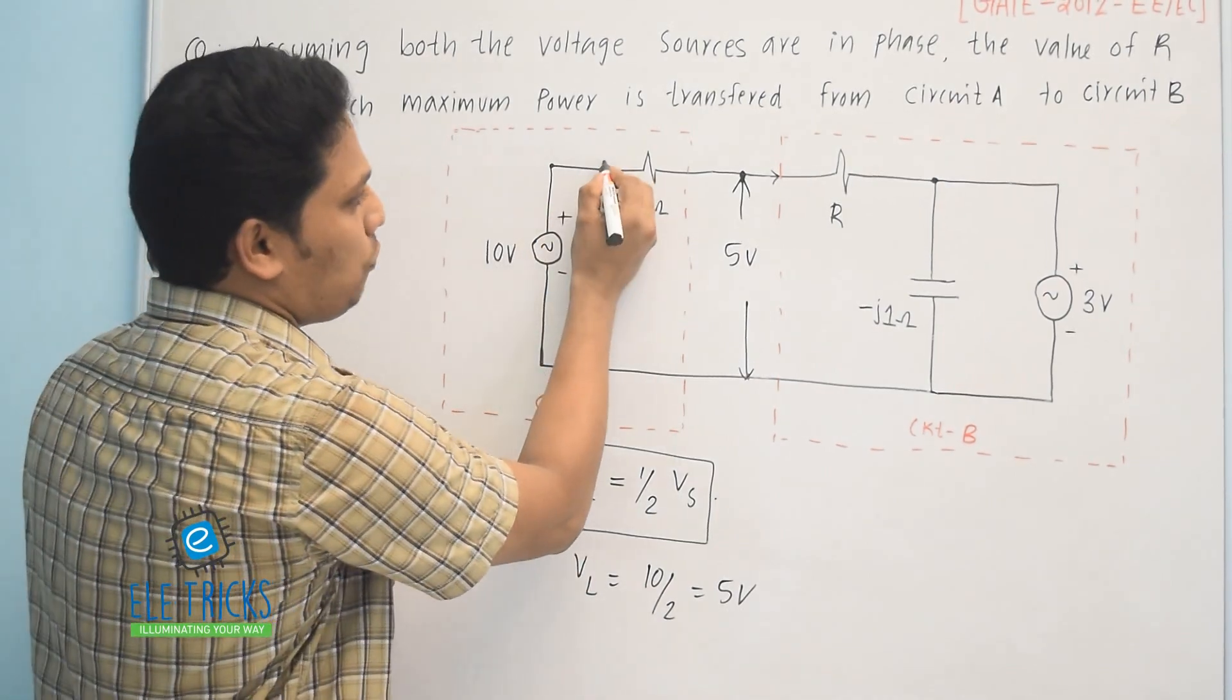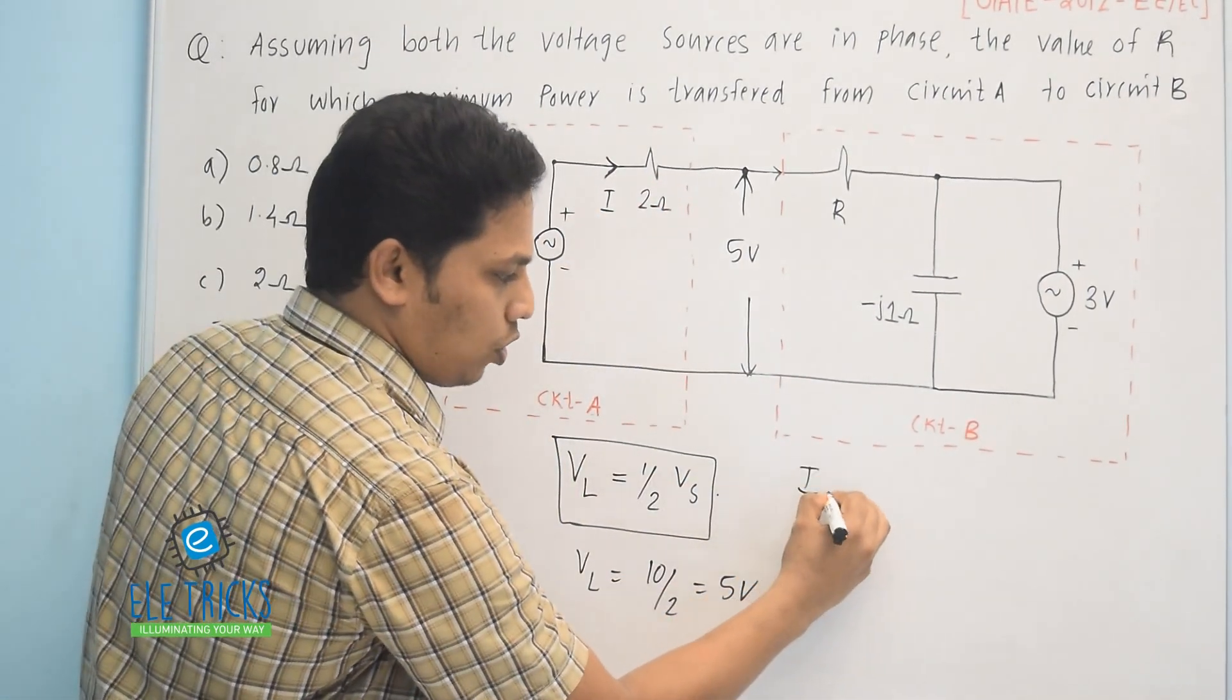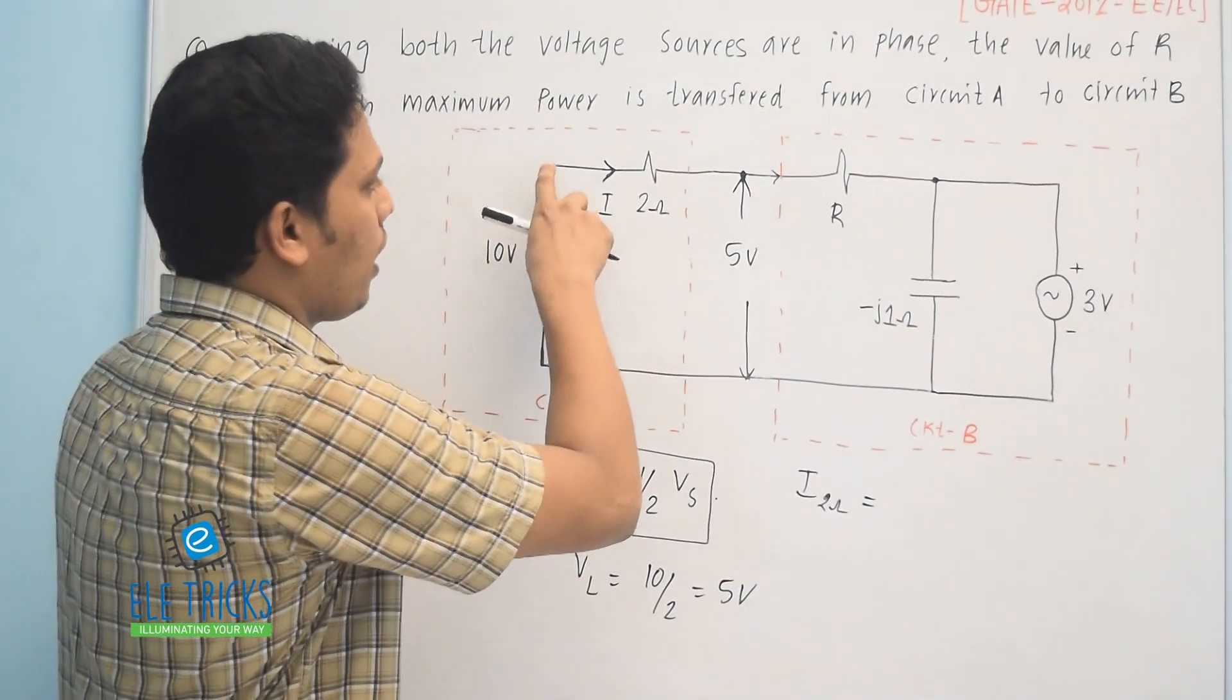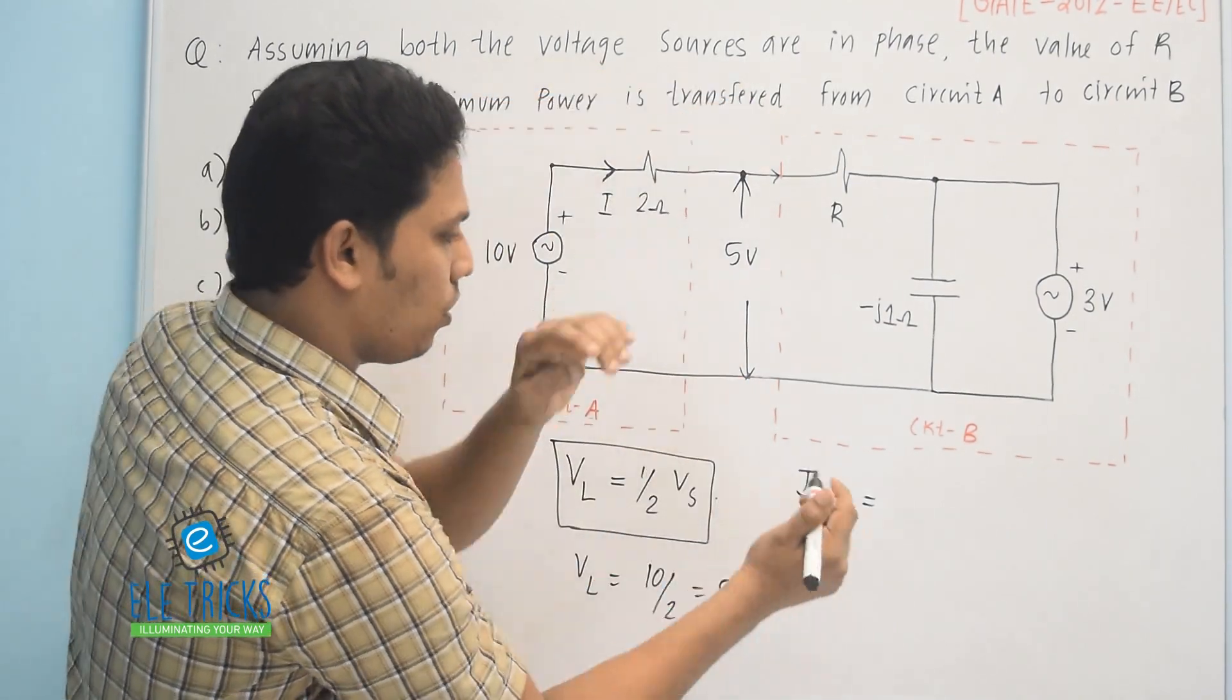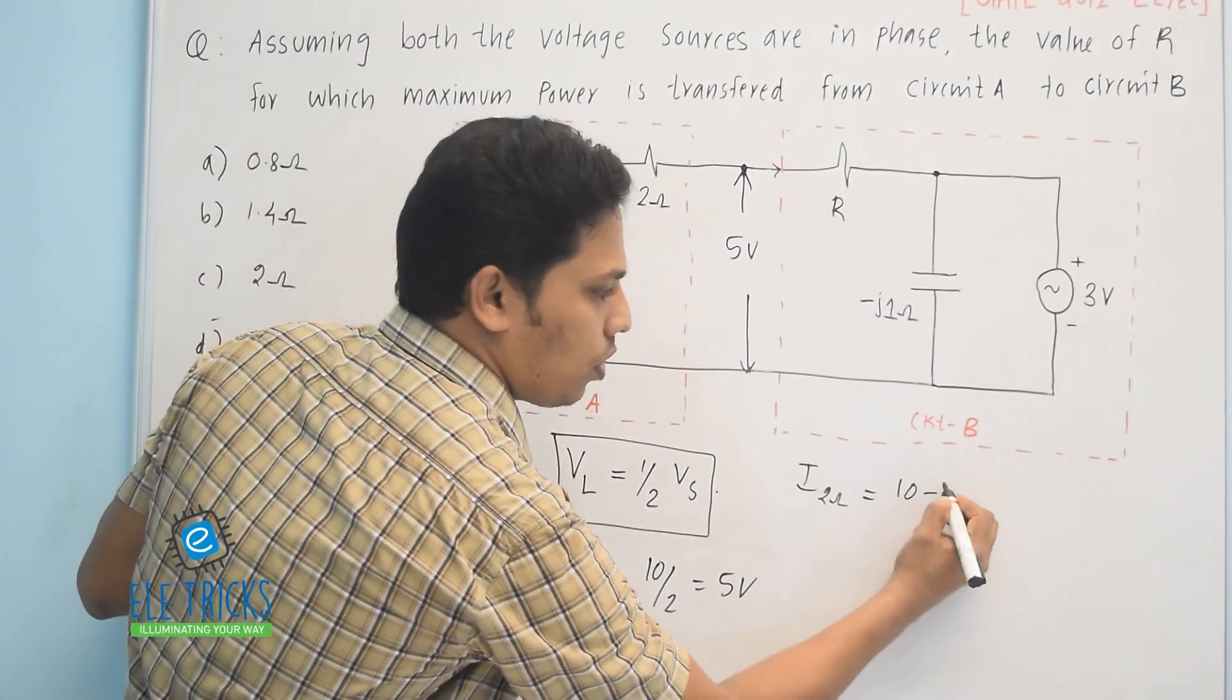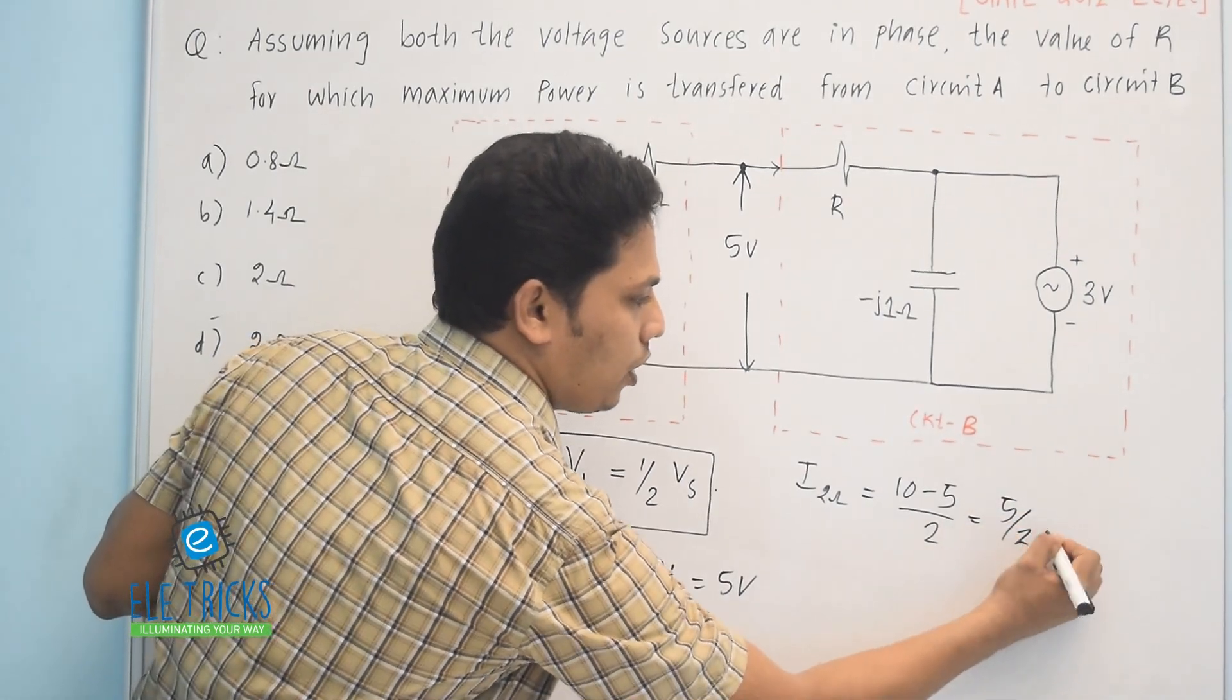Next, I am just finding the current through the 2 ohm resistance. Current through the 2 ohm resistance is equal to—here the voltage is 10 and here it is 5—so the potential difference is equal to 10 minus 5 divided by 2, that is equal to 5 by 2 ampere.